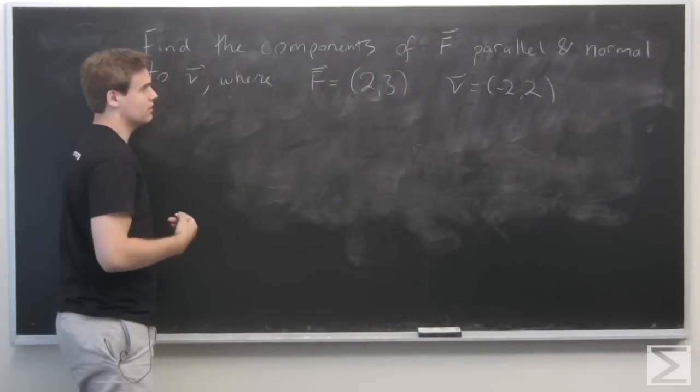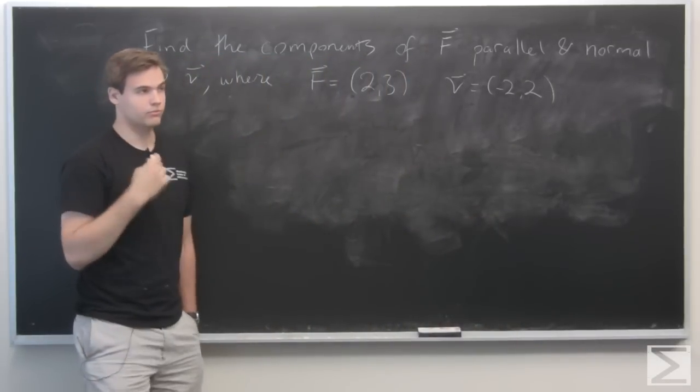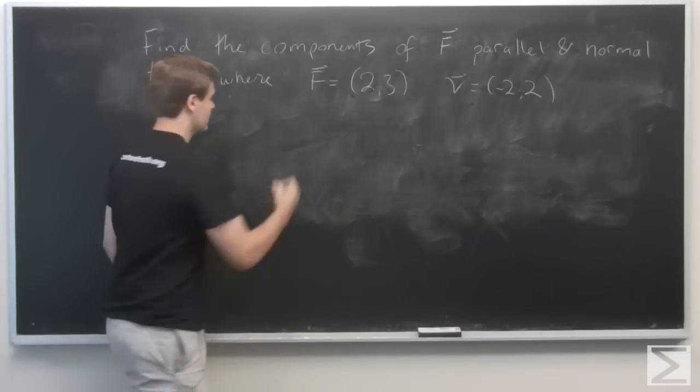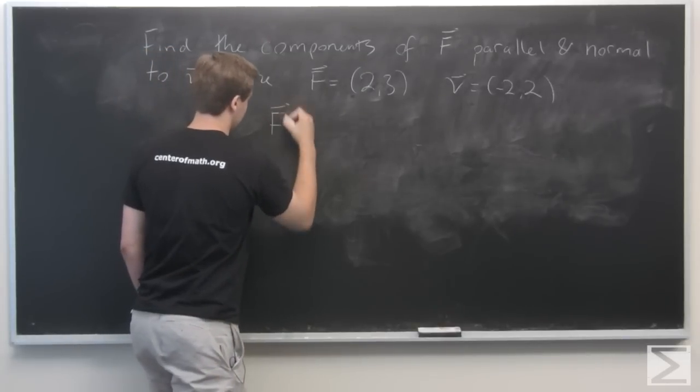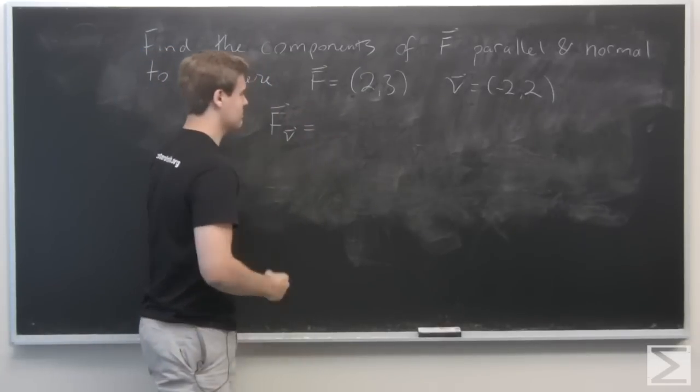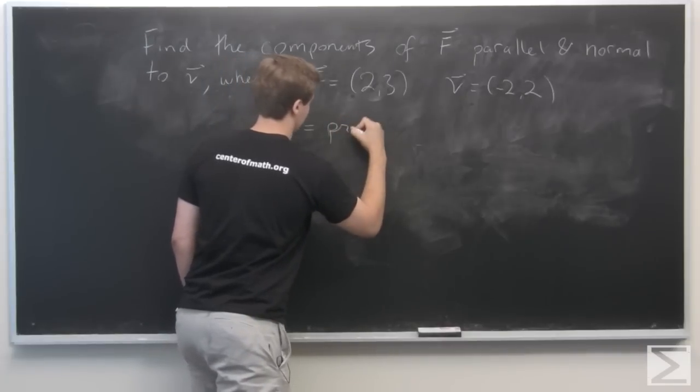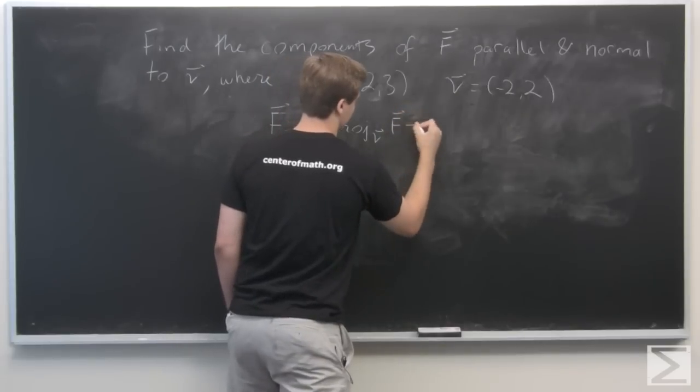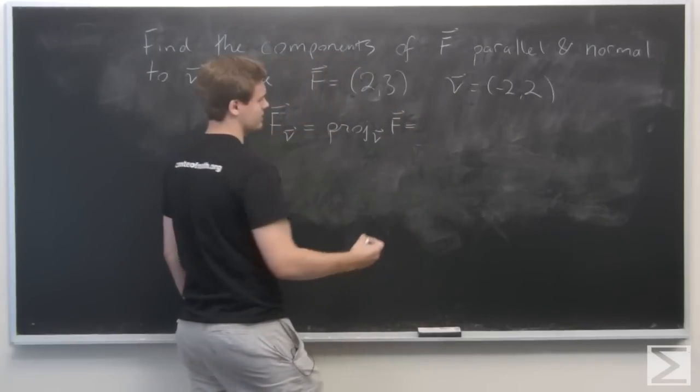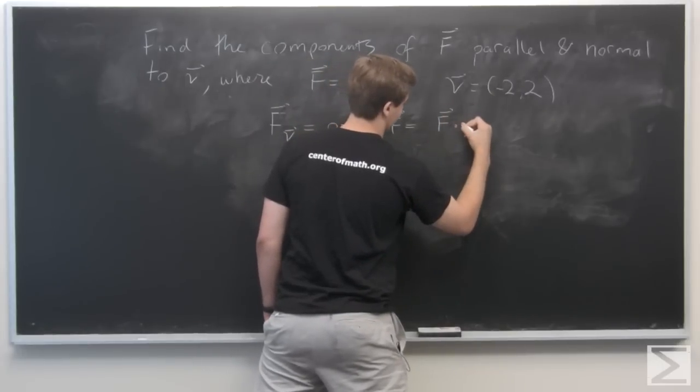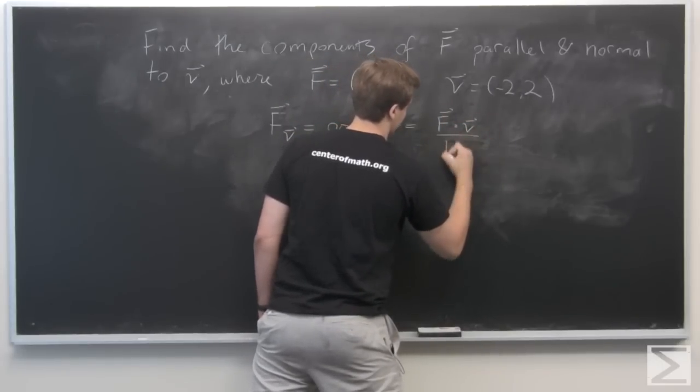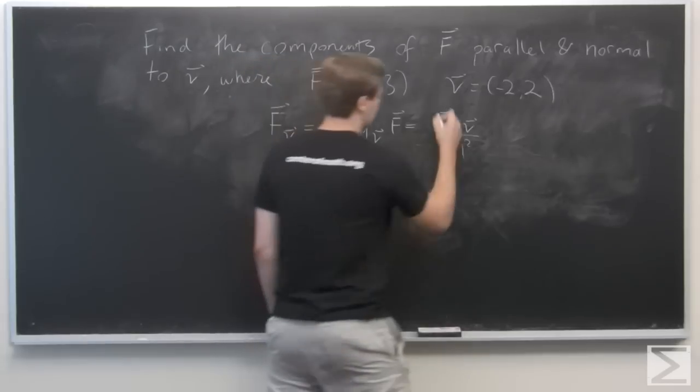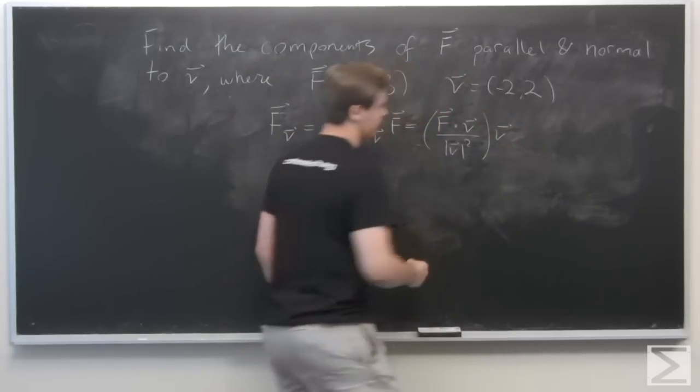So recall that the component of f parallel to v, or the orthogonal projection of f onto v, is given by this formula. Sometimes written proj_v(f), and we write this as (f·v) divided by ||v||² times the vector v.